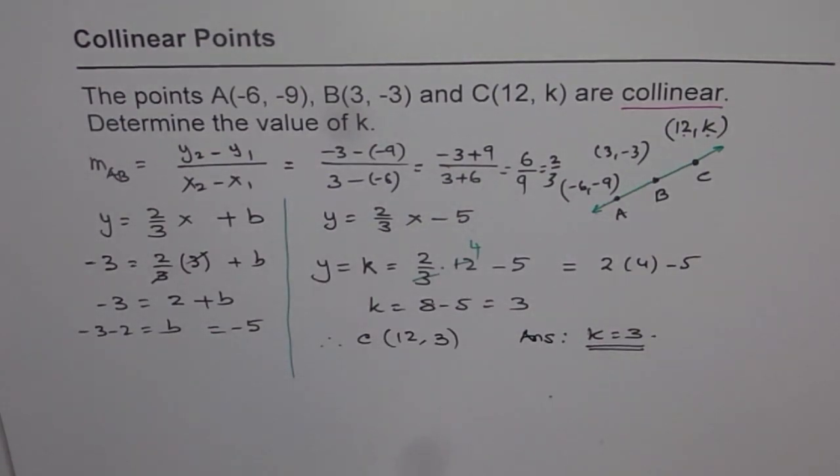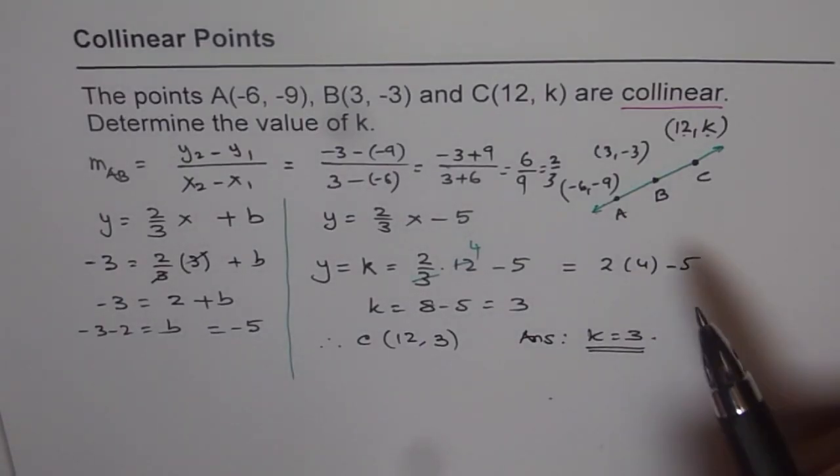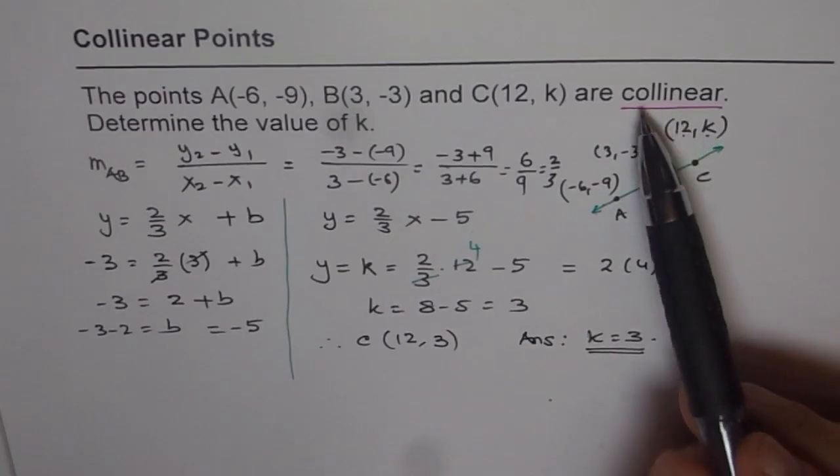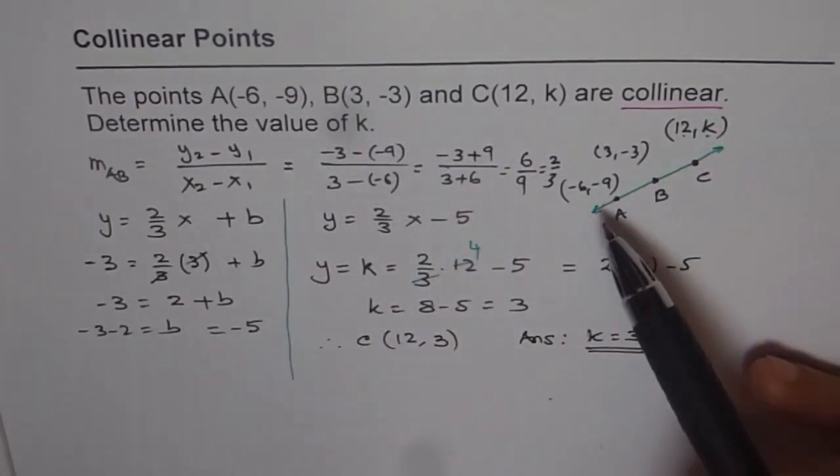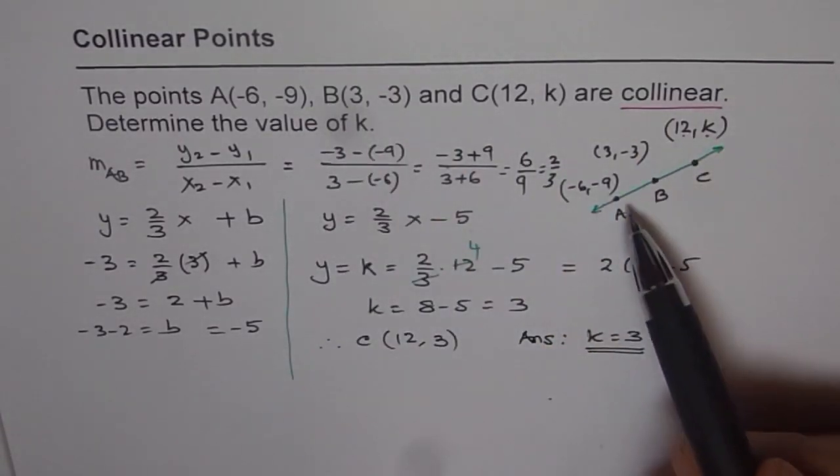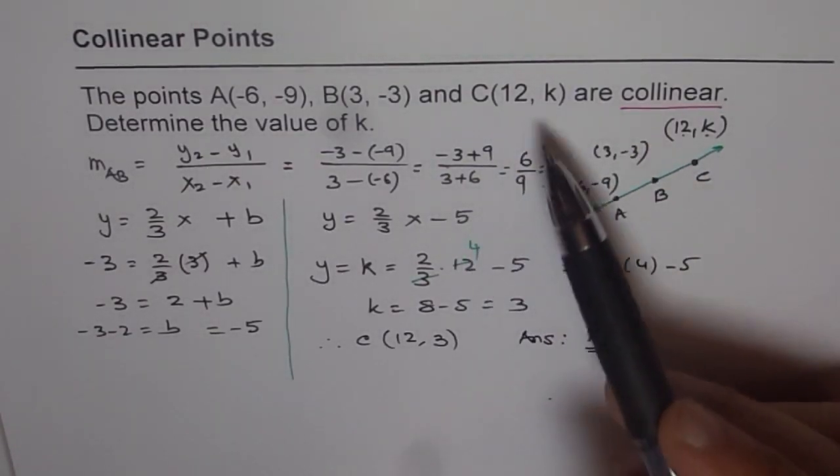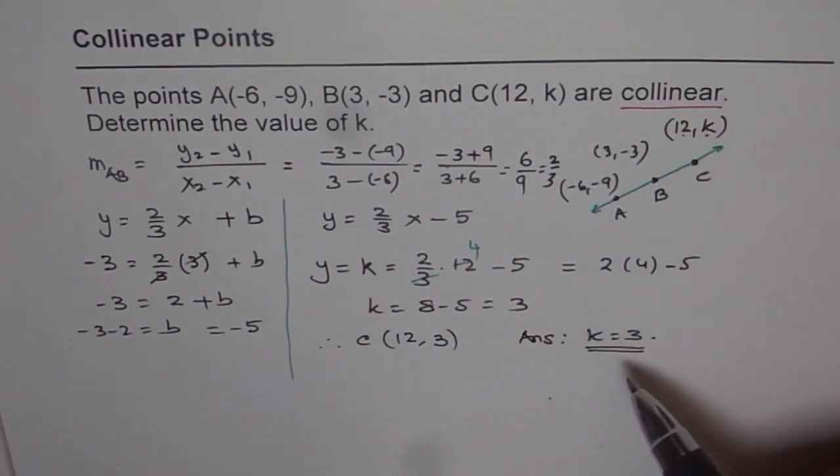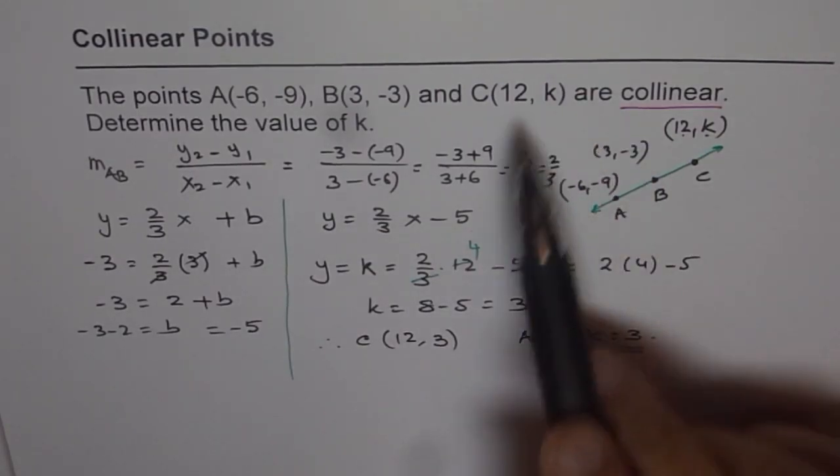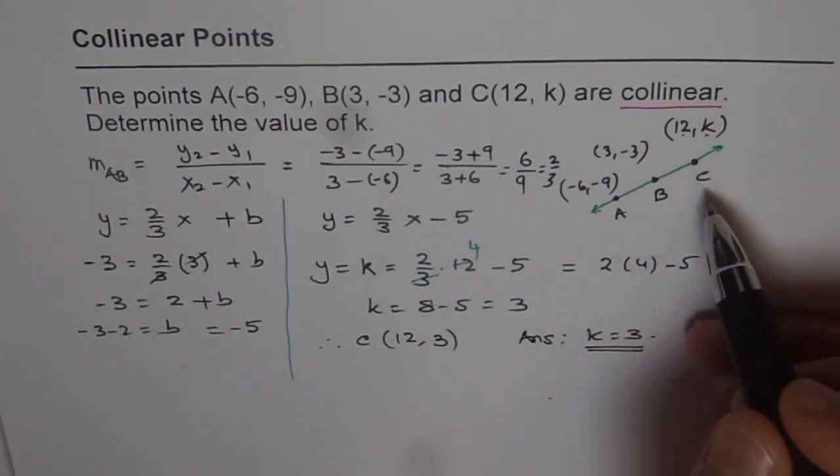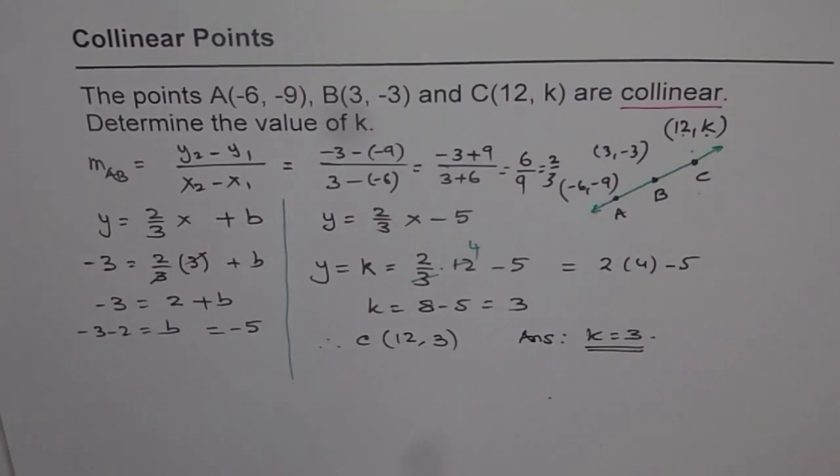Let's recap and see what we did here. First we understand collinear means that 3 points lie on the same line. We are given 2 points. We can find equation of a line using the 2 points. Once you get the equation, you substitute the X value of the third point and find the Y value, which is unknown, K. Only for K equals 3, this point is collinear. For any other value of K, this point will not be collinear, it will be somewhere else. I hope that's absolutely clear to you. Thank you.